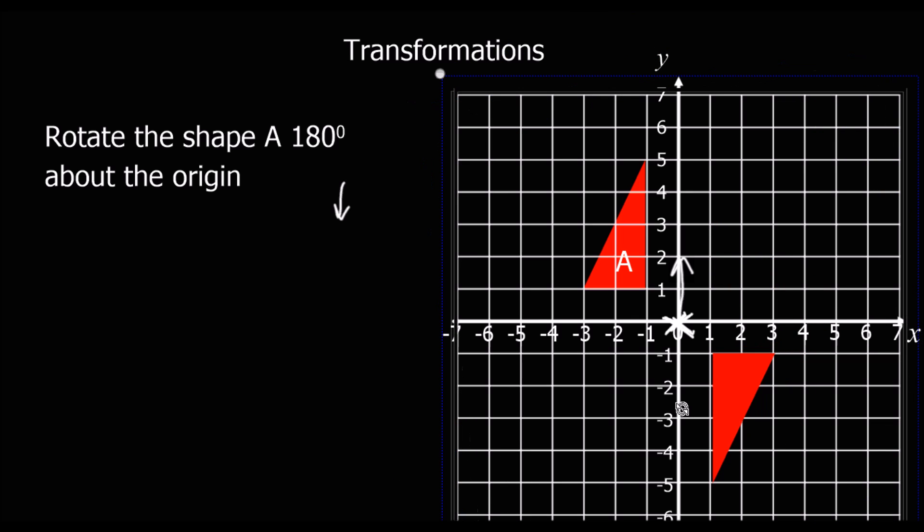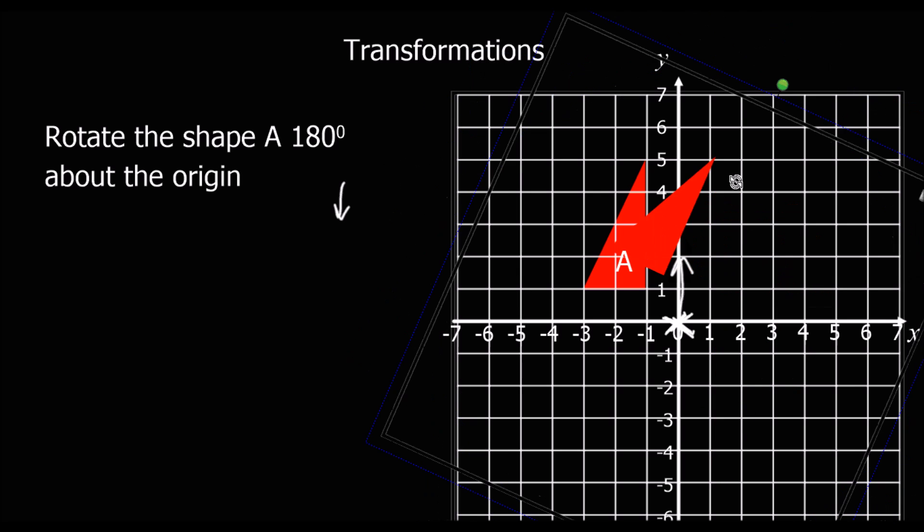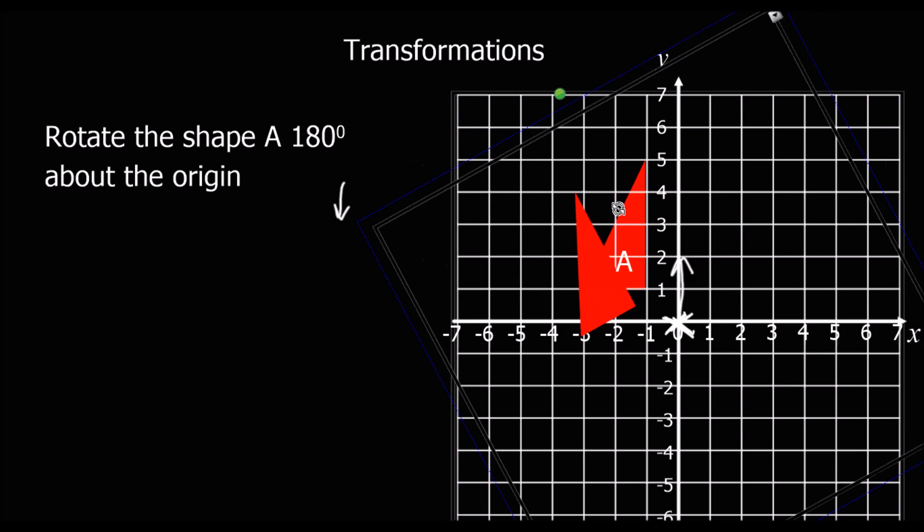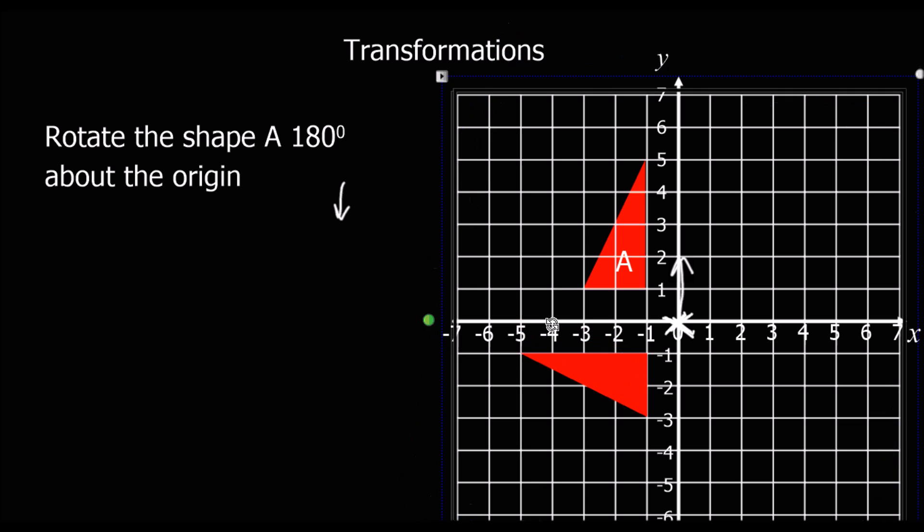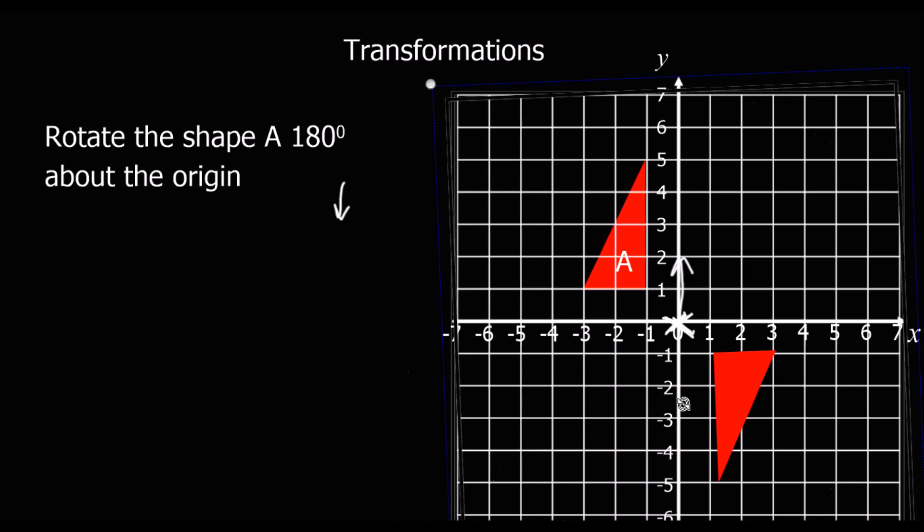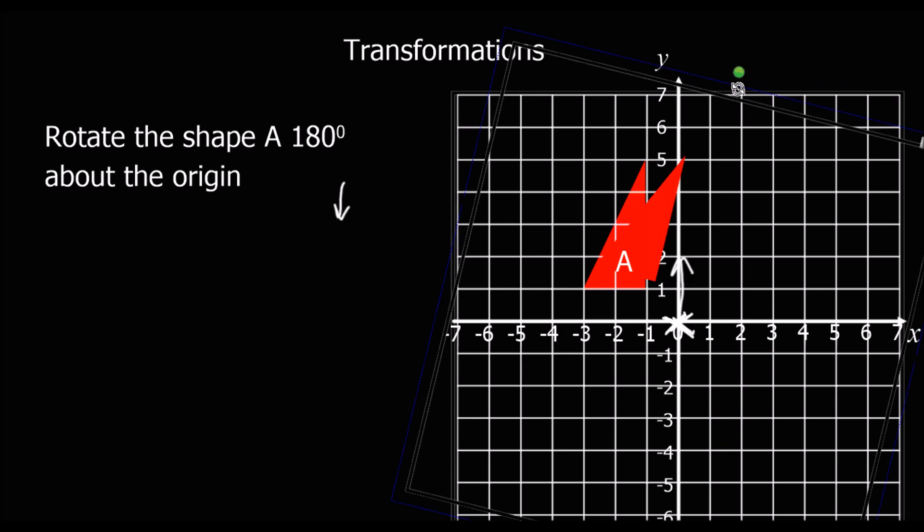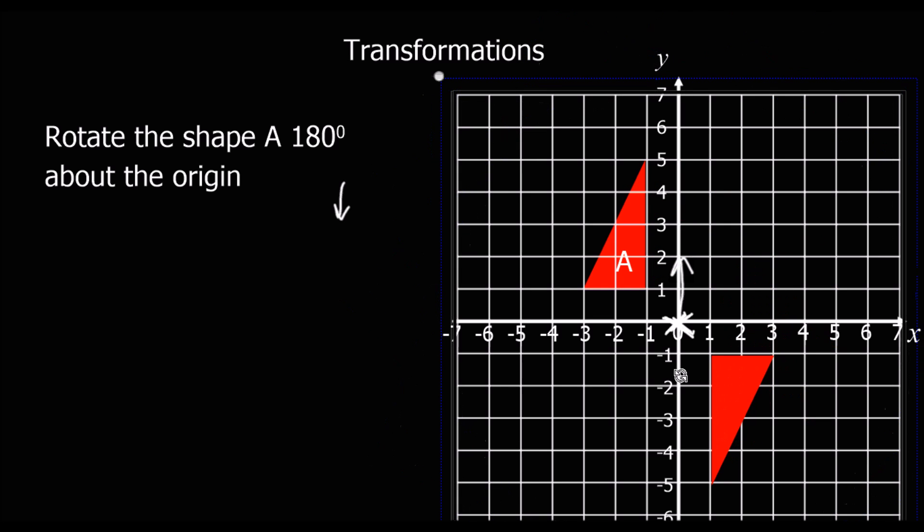In this case it doesn't matter if I go clockwise or anticlockwise, because if I went anticlockwise at 180 degrees, so 90 degrees anticlockwise, 180, I end up in exactly the same place if I go clockwise or anticlockwise. So that has been spun around 180 degrees about the origin.